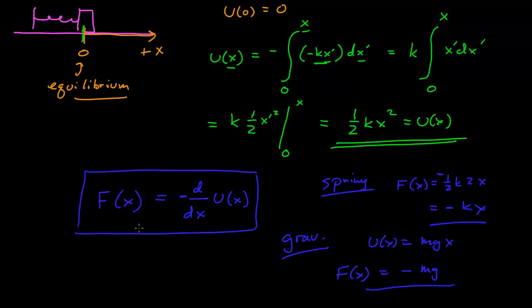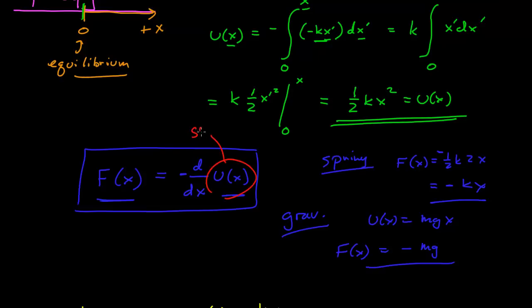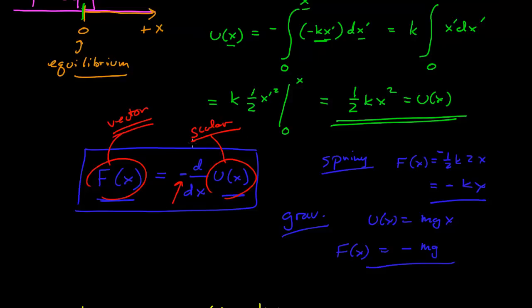This highlights what we've swept under the rug by limiting everything to one dimension. The potential energy function is a scalar, while force is a vector. The derivative of a scalar is also a scalar. In one dimension this works because direction is handled entirely by the sign. But we should be concerned: we have an equation relating a vector to a scalar, and we must be much more careful when we extend this idea to three dimensions.